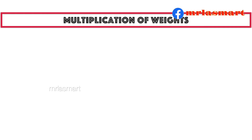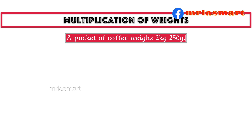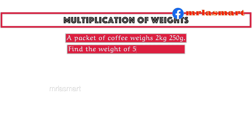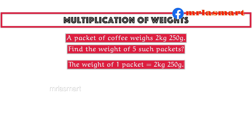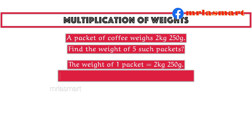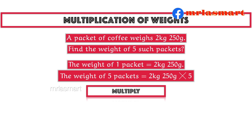Multiplication of weights. A packet of coffee weighs 2 kilograms 250 grams. Find the weight of 5 such packets. The weight of 1 packet equals 2 kilograms 250 grams. The weight of 5 packets equals 2 kilograms 250 grams multiplied by 5.